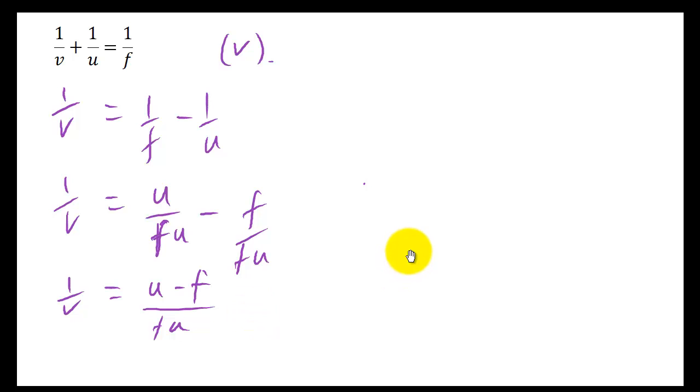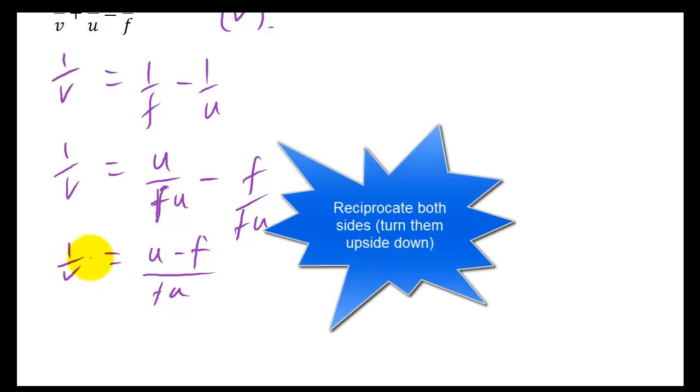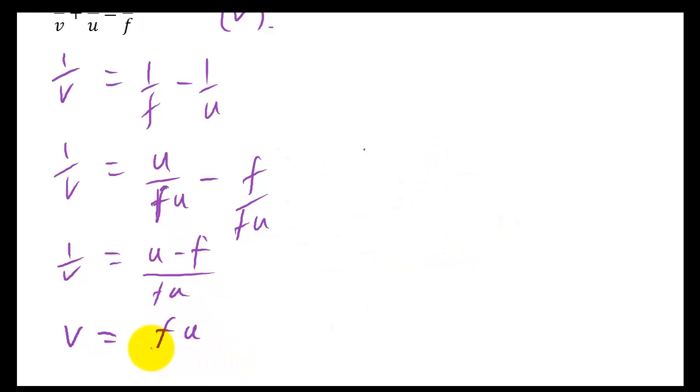And to finish that up, we can just reciprocate, turn this upside down. So 1 over V turned upside down is just V over 1, which is just V. And on this side, turn this upside down, you're left with FU on the top, and U minus F on the bottom.